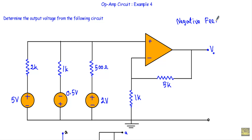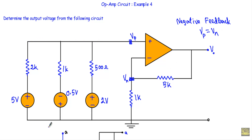When an operational amplifier is in negative feedback, the inverting terminal voltage Vn will be equal to the non-inverting terminal voltage Vp, so Vp equals Vn. Between the non-inverting terminal and ground we have a 5-volt source in series with a 2 kΩ resistor, a 0.5-volt source in series with 1 kΩ, and a 2-volt source in series with 500 Ω.